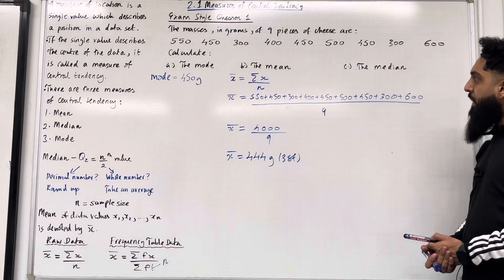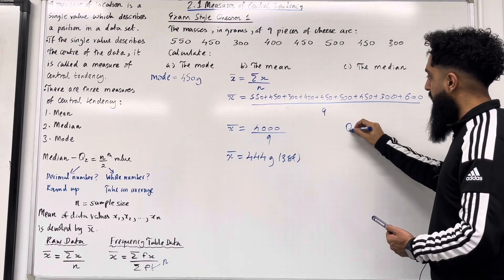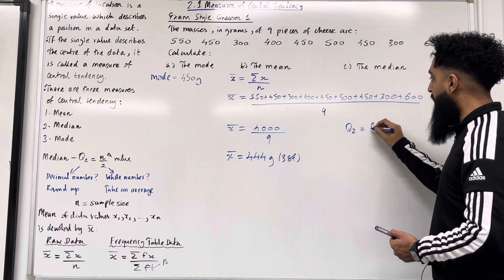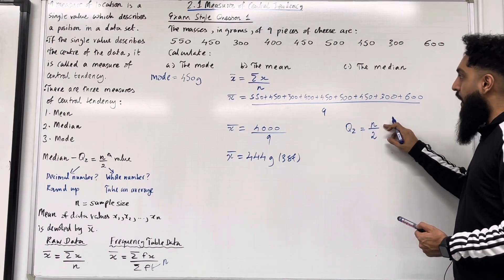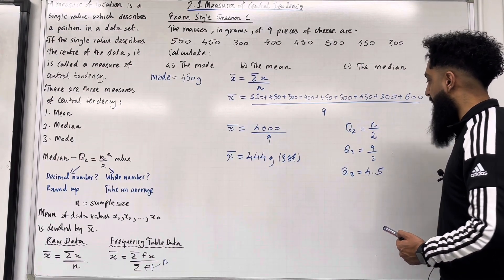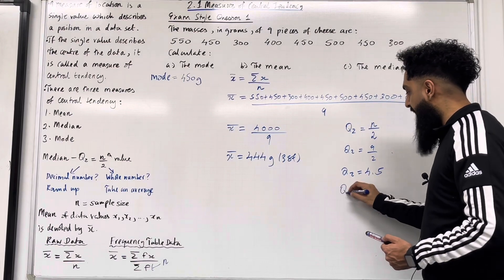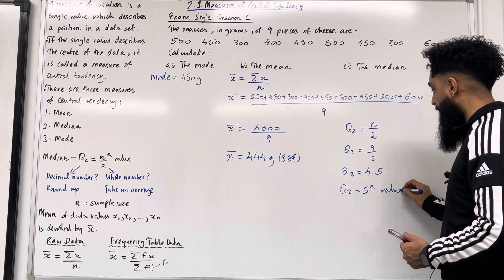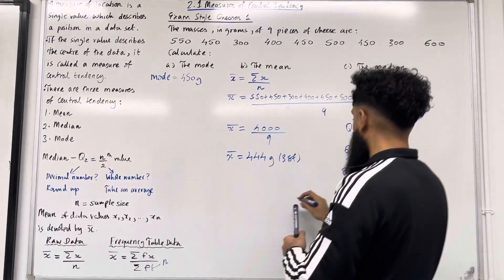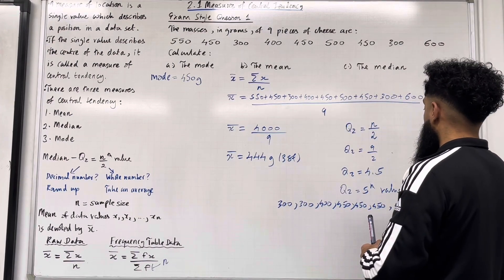Let's have a look at part C. We would like to calculate the median, denoted by Q2, also called the second quartile. To calculate the median we apply the formula N over 2. N is our sample size which is 9, so Q2 is equal to 9 over 2, which gives 4.5. Since this is a decimal number, we must round up, so Q2 will be the fifth value in the data set. We put the data set in ascending order.